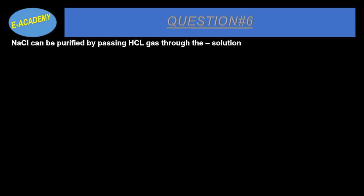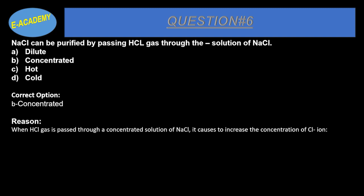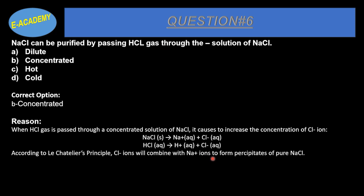Question No. 6: NaCl can be purified by passing HCl gas through the concentrated solution of NaCl. The correct option is B, concentrated. When HCl gas is passed through a concentrated NaCl solution, the chloride ion concentration increases. NaCl dissociates into Na⁺ + Cl⁻, and HCl dissociates into H⁺ + Cl⁻; according to Le Chatelier's principle, the increased Cl⁻ combines with Na⁺ to form precipitates of pure NaCl.